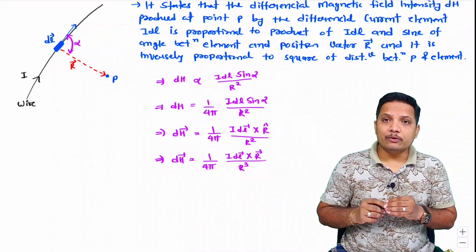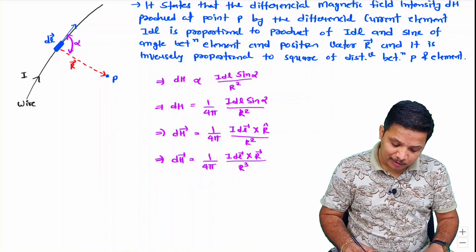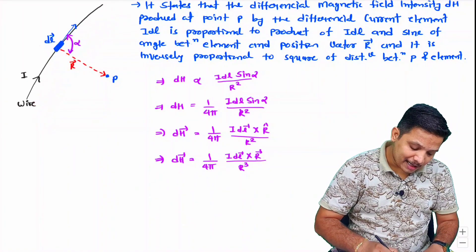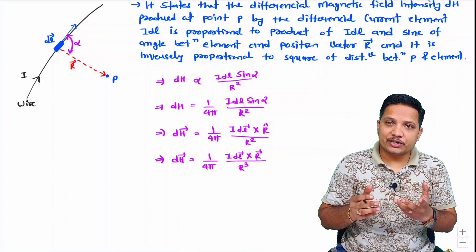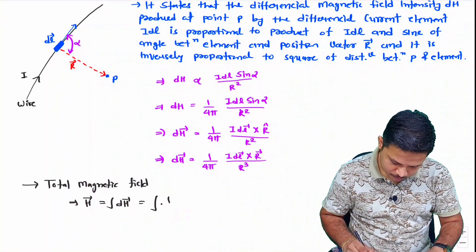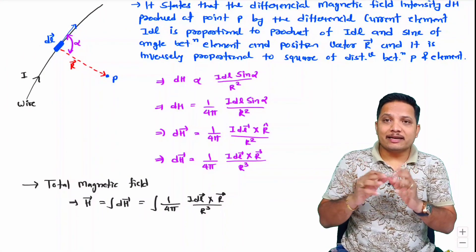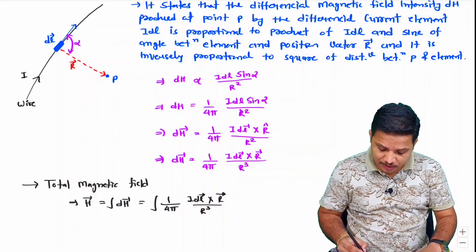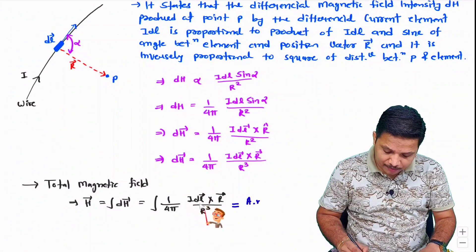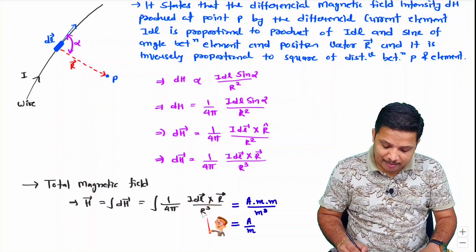Now I will explain how to calculate the complete magnetic field. This differential formula is for a small differential length DL, but the wire carries current I along its full length. So the complete magnetic field H is obtained by integration of DH over the wire. Regarding units: I is in amperes, DL is in meters, and distance R is in meters, so the unit works out to ampere-meter × meter / meter³, which gives ampere per meter (A/m).